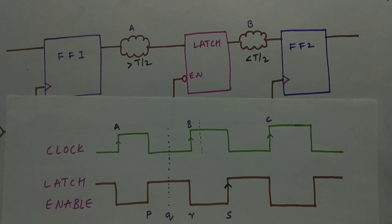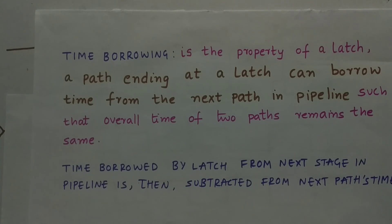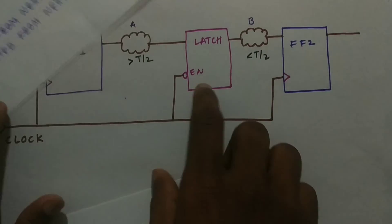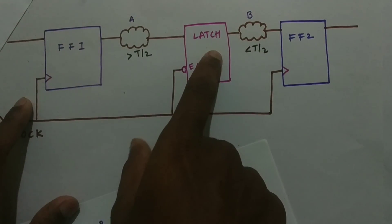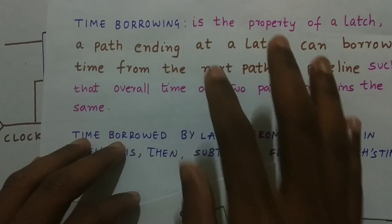Let us come back to the definition of time borrowing. Time borrowing is a property of a latch: a latch can borrow time from the next stage in the pipeline such that the overall time of the two stages remains the same. Time borrowed by the latch from the next stage is subtracted from the next path. As seen in the example, when time is borrowed from the latch, the latch-to-flip-flop time is reduced. That is the definition of time borrowing.